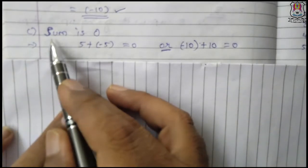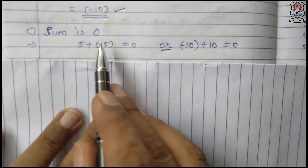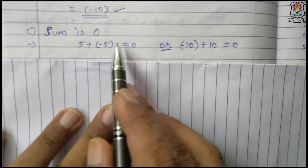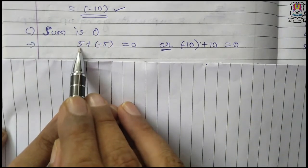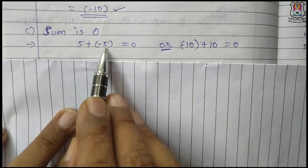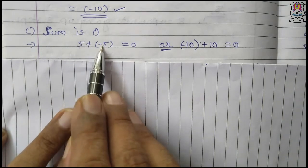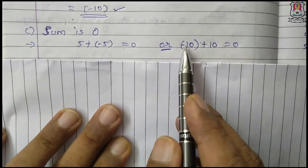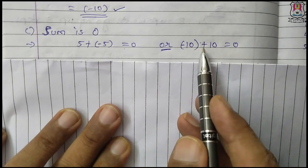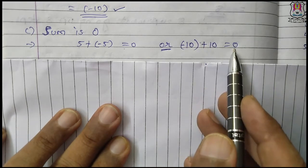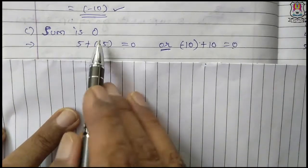Part C says: write two pairs of integers whose sum is 0. It is simple. 5 plus minus 5: plus minus is minus, so 5 minus 5 equals 0. Or you can write minus 10 plus 10: plus minus is minus again, and 10 minus 10 equals 0. These are two more examples.